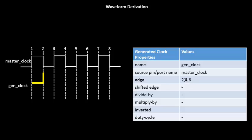Next, it says the first falling edge of the generated clock arrives at the fourth edge of the source clock. So the next falling edge will come something like this. Then the next rising edge — the second rising edge of the generated clock — comes at the sixth edge of the master clock. And that's it. This is the waveform that we have.